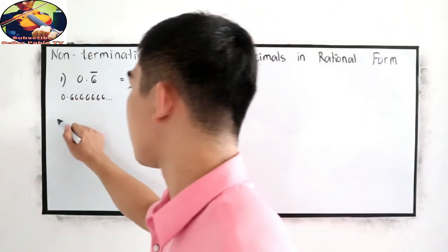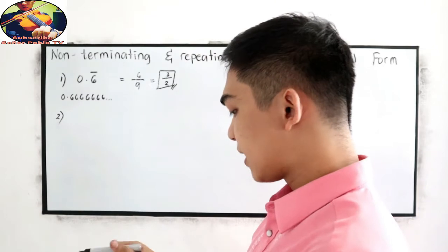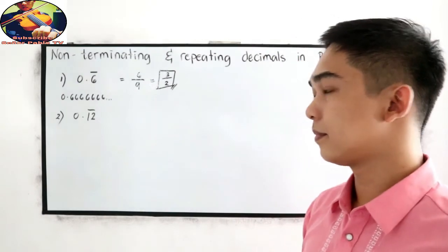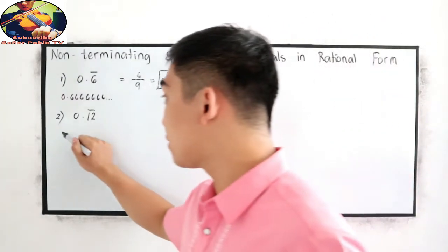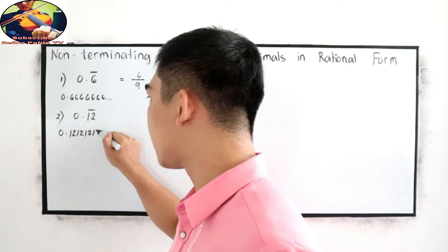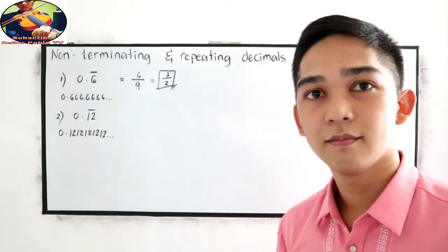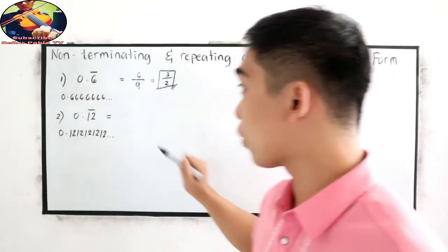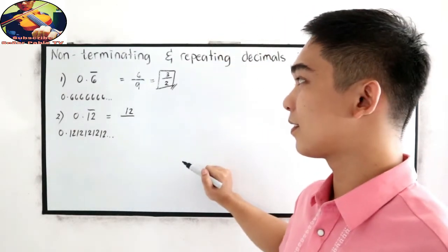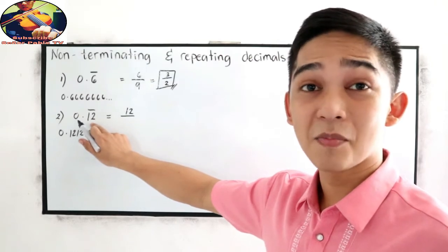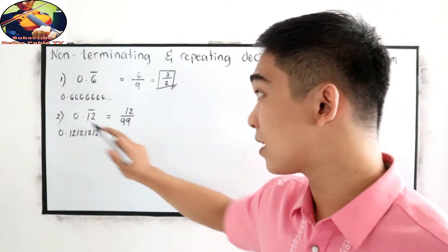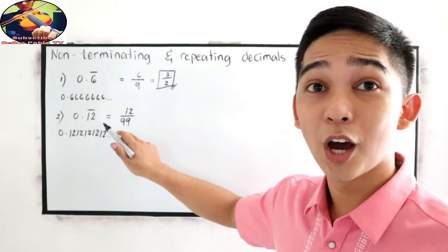Next, our second case. Let's say 0.12 bar. That is equivalent to 0.12121212 and so on. That is equal to copying 12 over — since we have 2 decimal places with a bar, we're going to write 9, 9 in our denominator. So, we have 99 in our denominator.